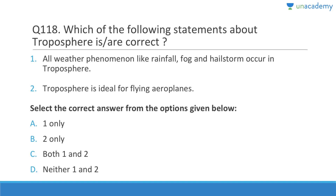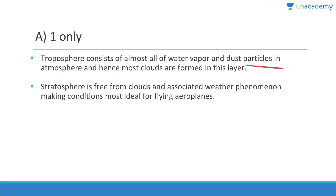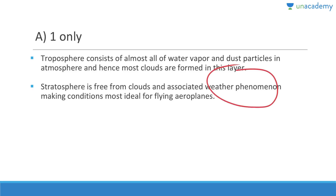Which statements about the troposphere are correct? All weather phenomena like rainfall, fog, and hailstorms occur in the troposphere. Aeroplanes do not fly in the troposphere — they fly above it, almost at the junction of the troposphere and stratosphere. The troposphere contains almost all water vapor and dust particles; most clouds are formed in this layer. The stratosphere is free from clouds, making it ideal for flying aeroplanes.